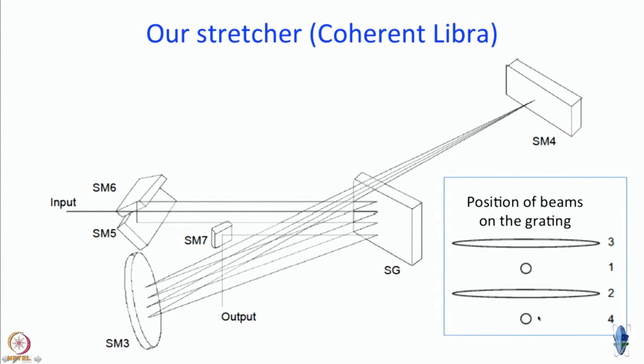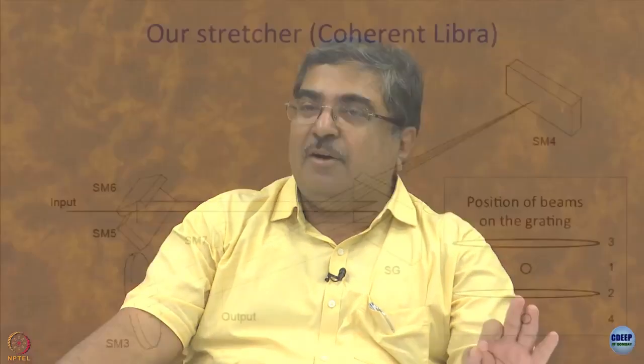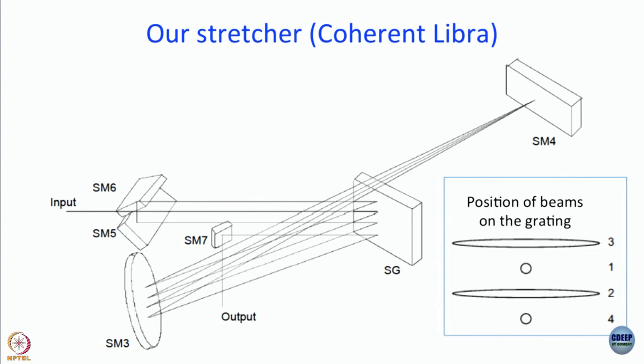That is what goes to SM7 and from there it moves out. This is the stretcher we have in our laser, we will see in our amplifier.